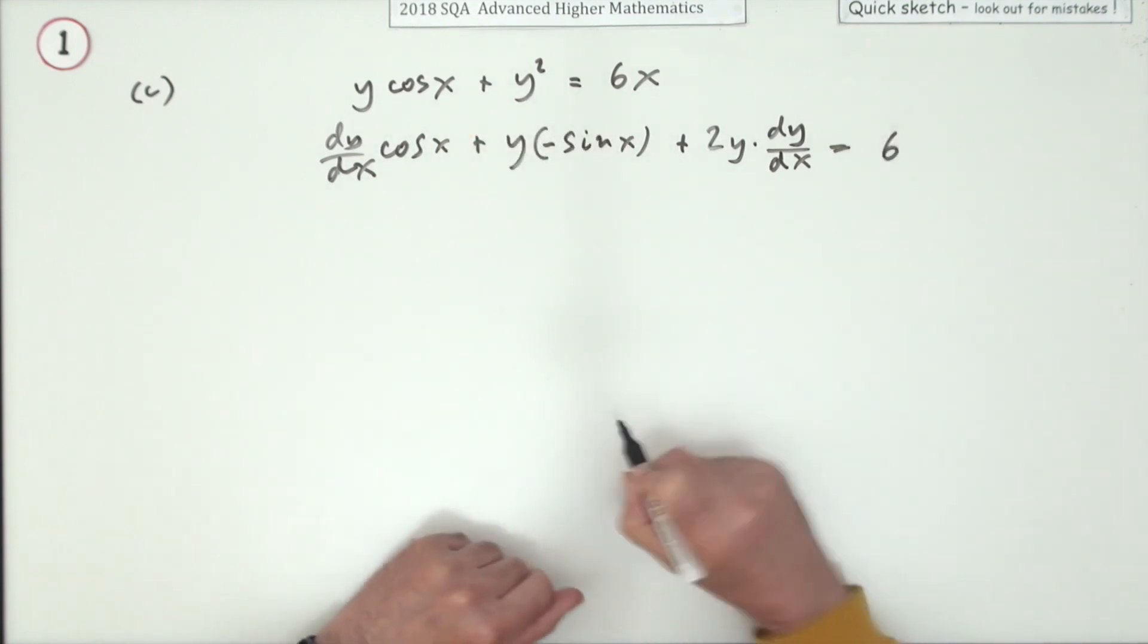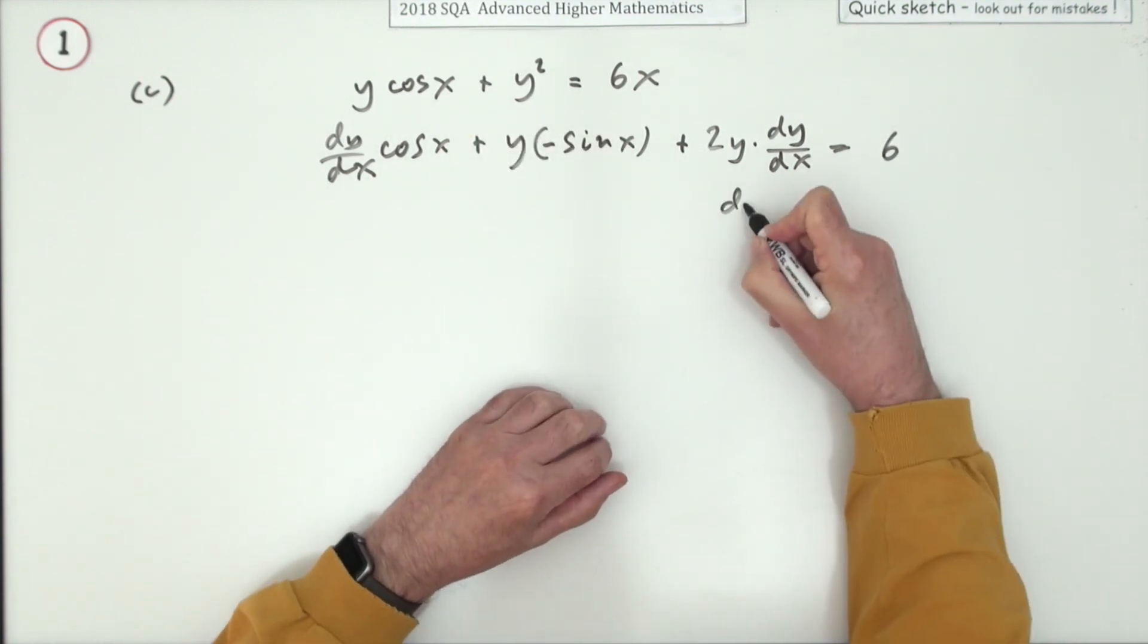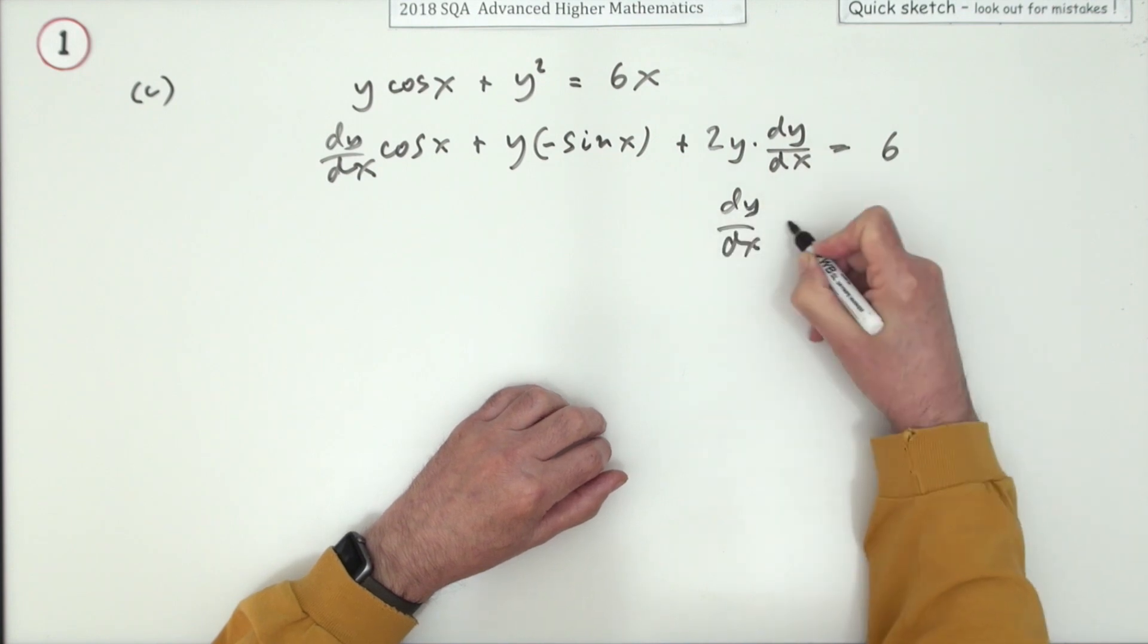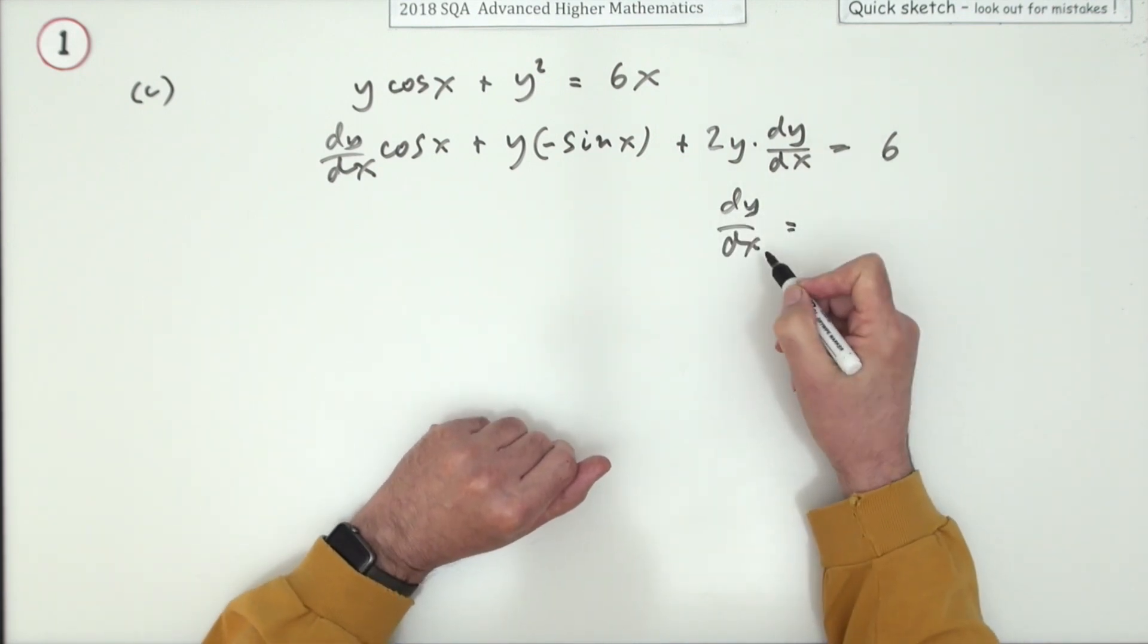And 6x just goes to 6. Now gather the parts up. There'll be some parts that say dy/dx and there'll be parts that don't.